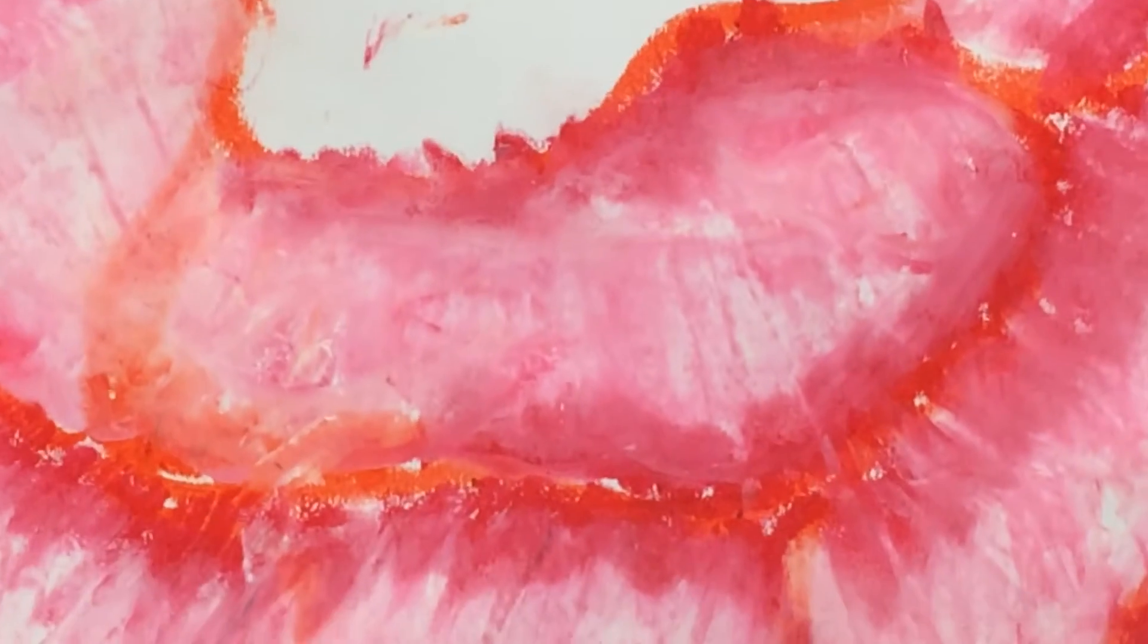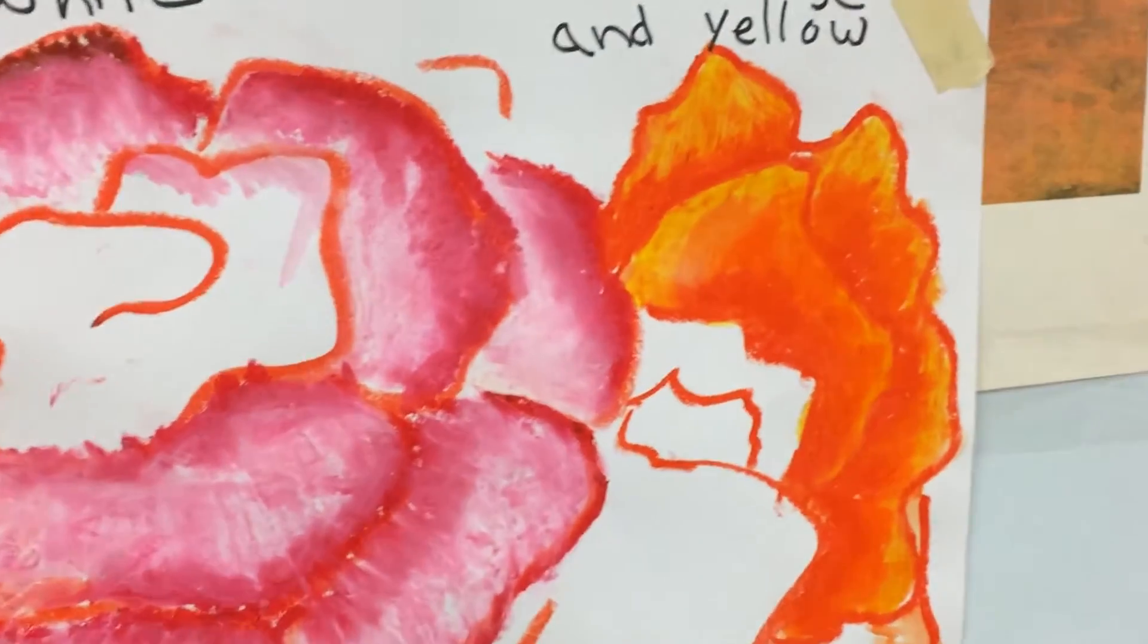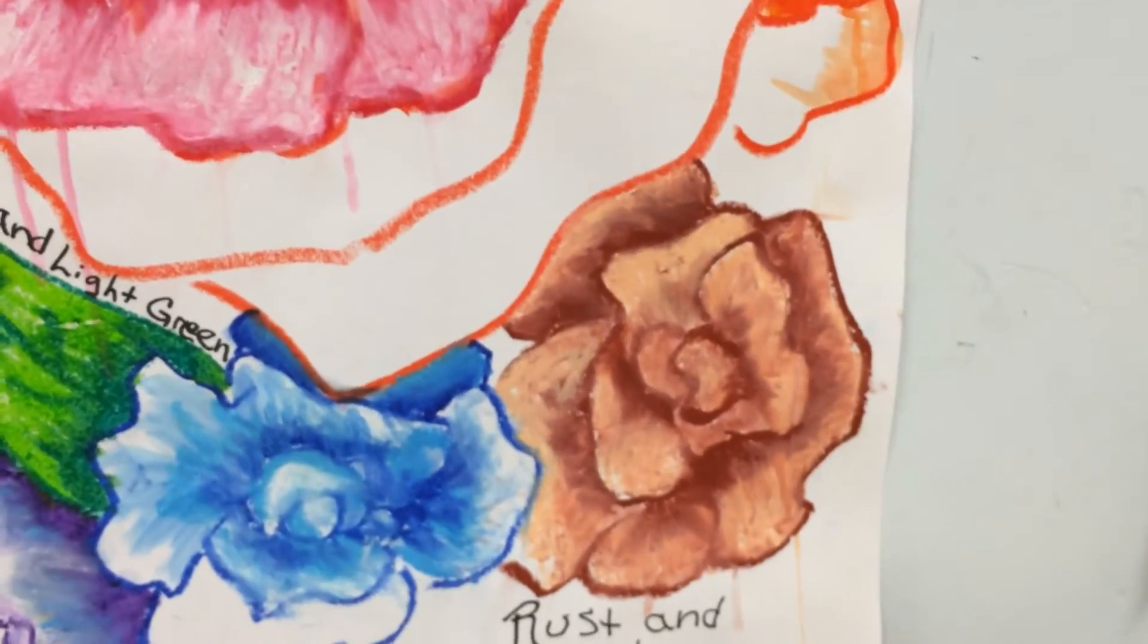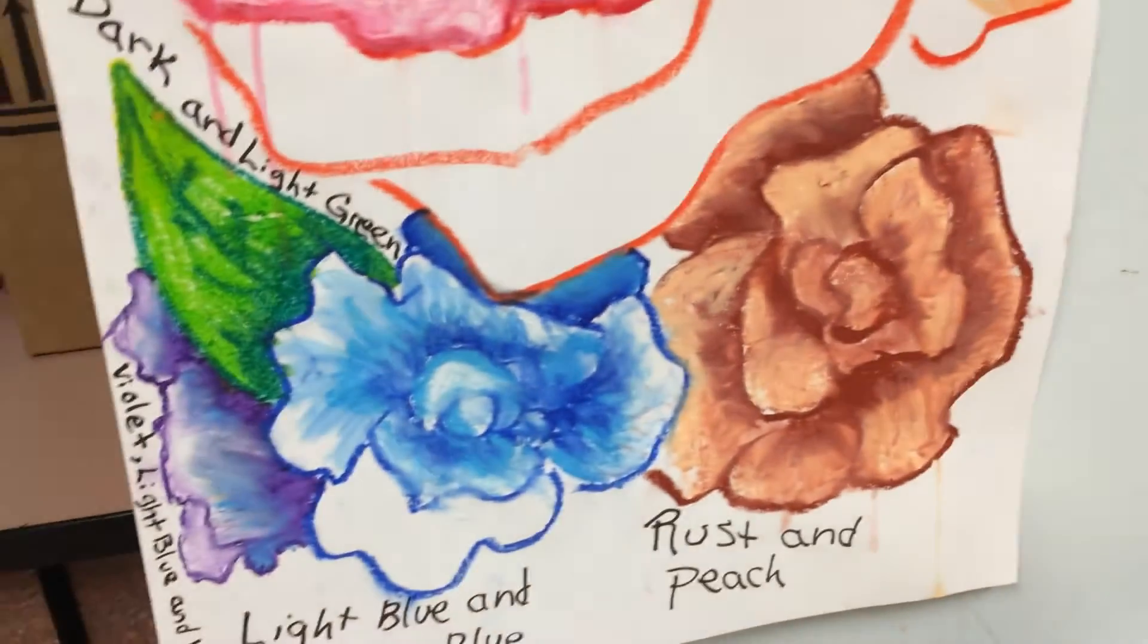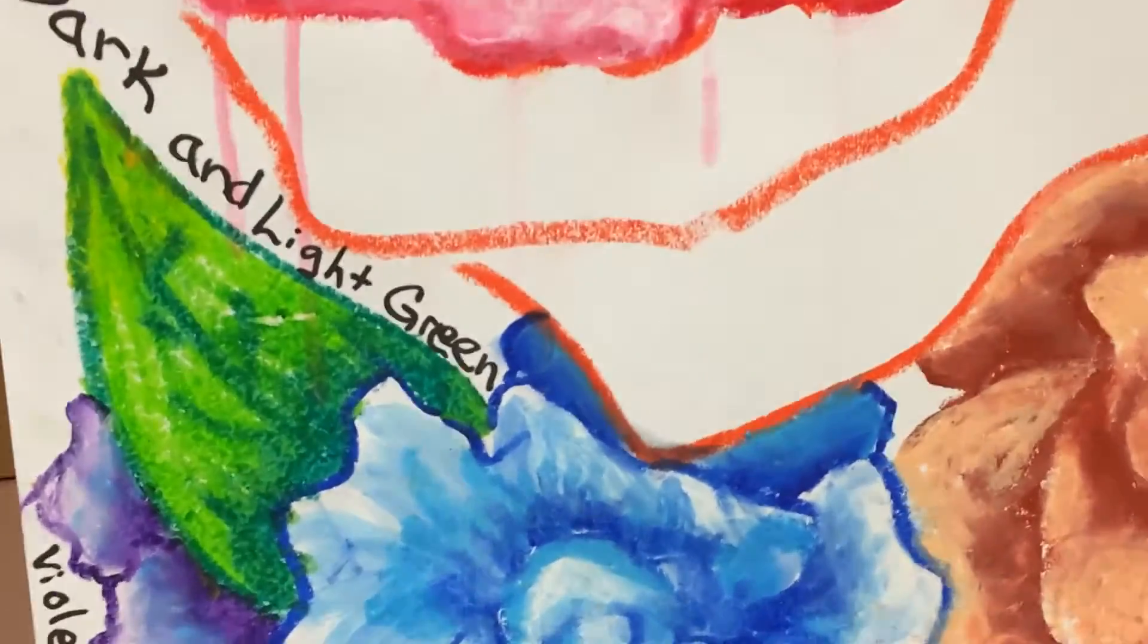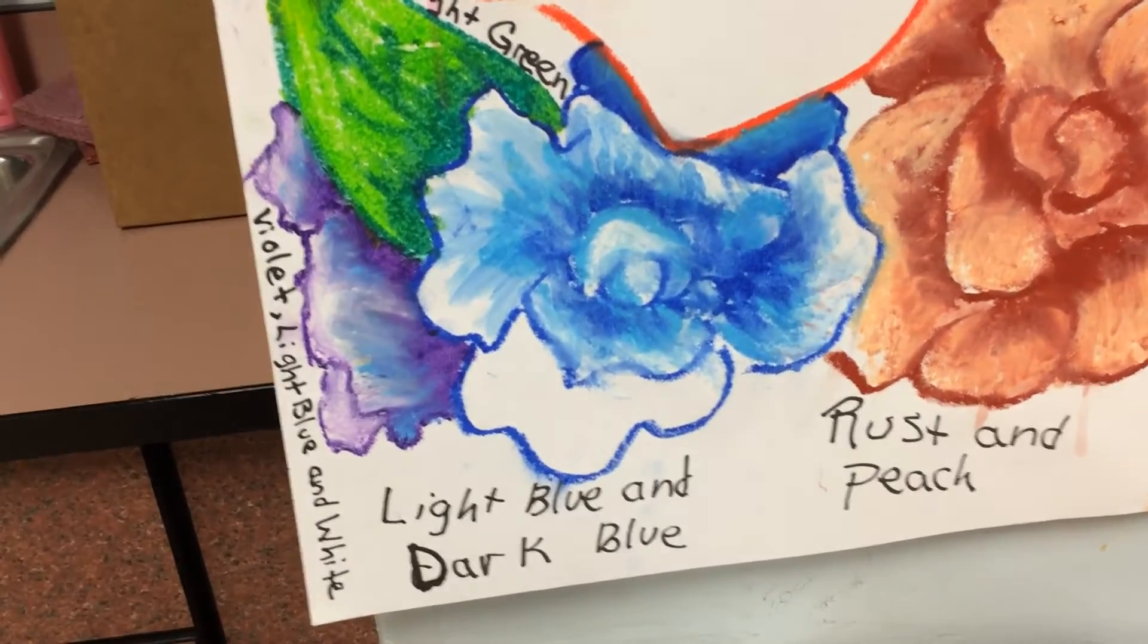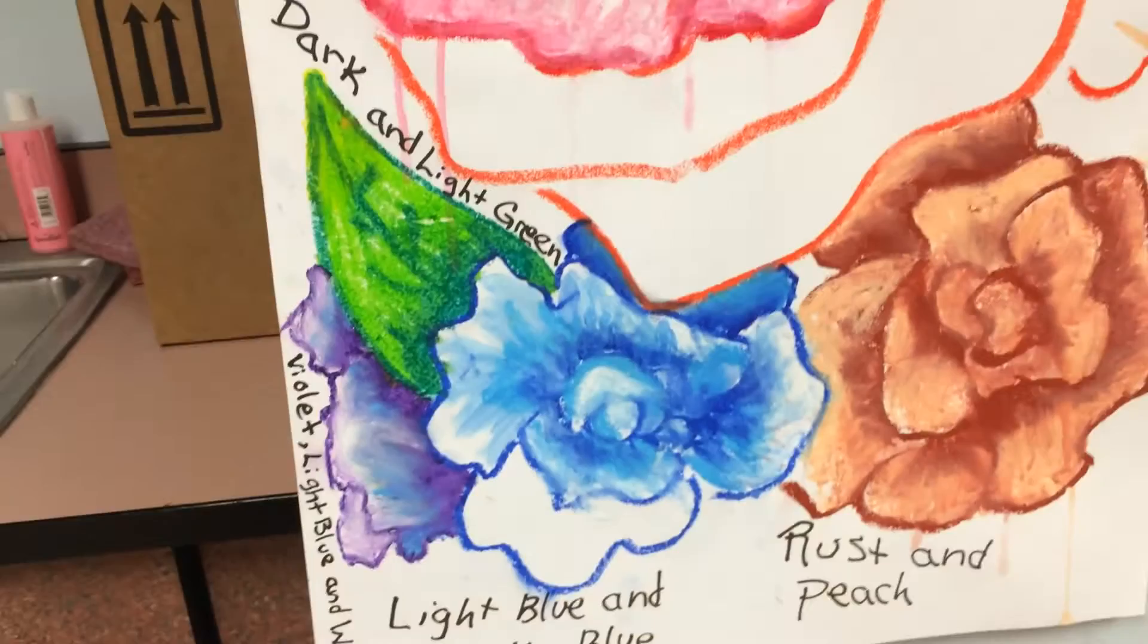Here are the color combinations that go well together. Red and white go very beautifully together. Red, orange, and yellow go very beautifully together. Rust and peach actually go very nicely together. Blue and light blue and dark blue go beautifully together. Dark and light green go beautifully together. And violet with white and light blue go beautifully together.